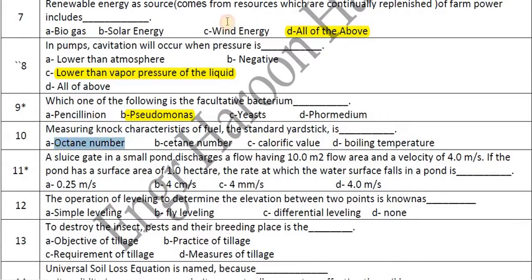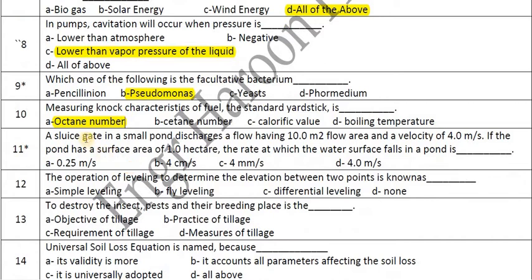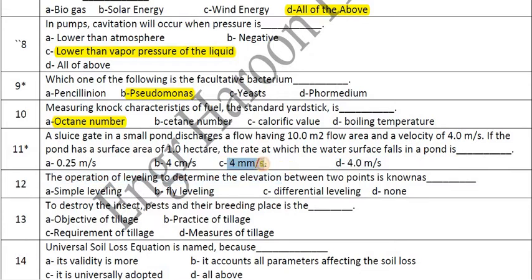A sluice gate in a small pond discharges a flow having a 10 square meter flow area and a velocity of 4 mm per second. If the pond has a surface area of one hectare, the rate at which the water surface falls in the pond is 4 mm per second — you can calculate it.